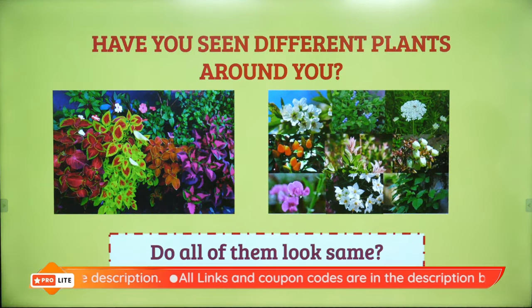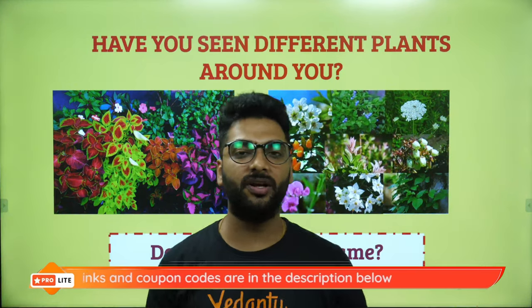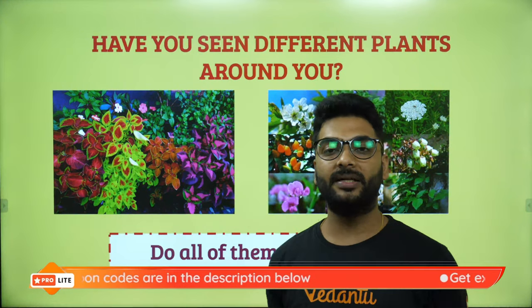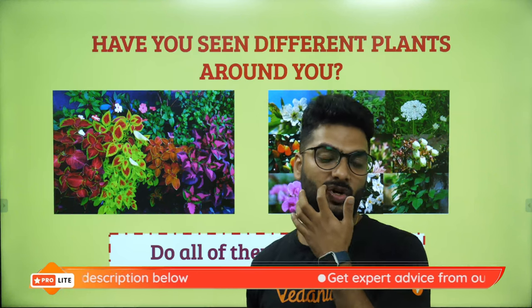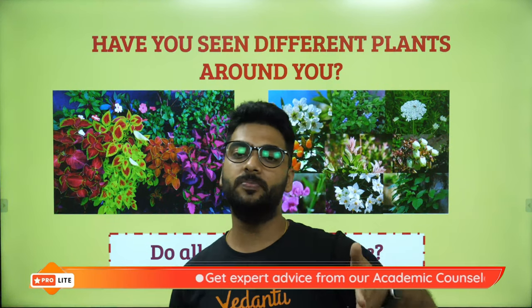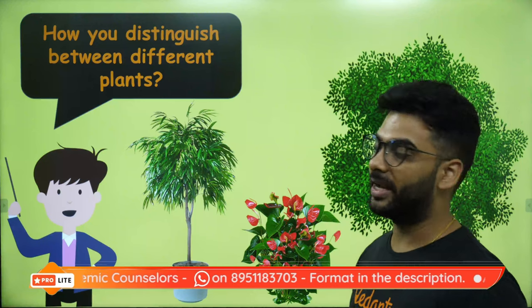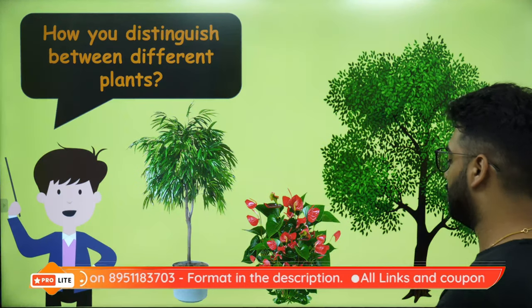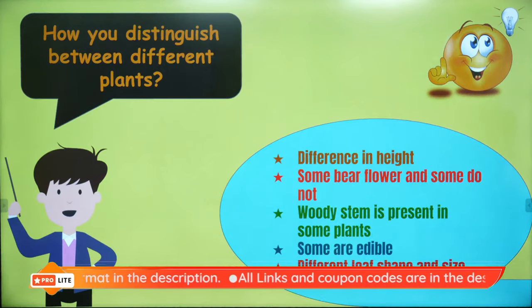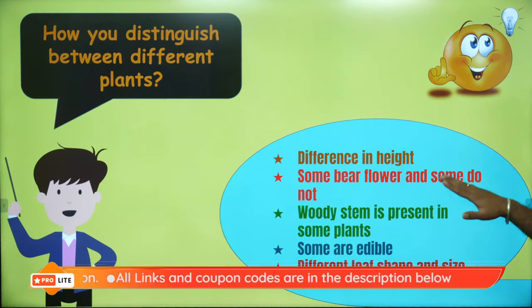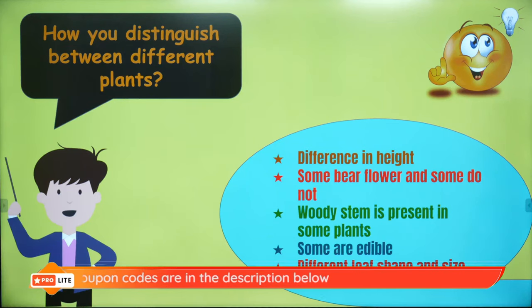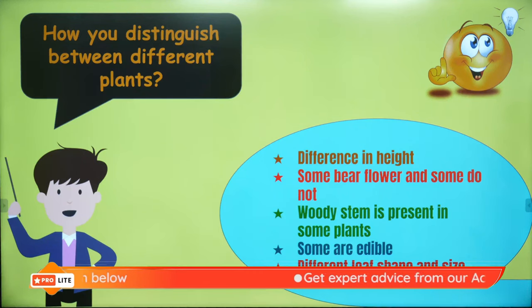Have you seen different plants around you? We have all seen different kinds of plants, and plants can broadly be classified based on their stem as shrubs, herbs, trees, and climbers and creepers. We can differentiate them based on their height, whether they bear flowers or not — that is gymnosperms and angiosperms, which you will learn in grade 9 and 10 — woody stem, edible or inedible, and different leaf shape and size.